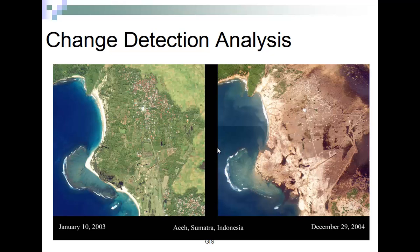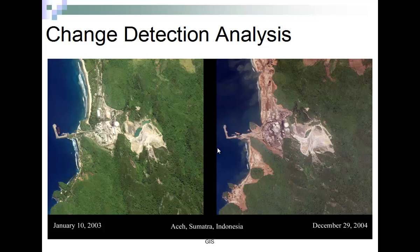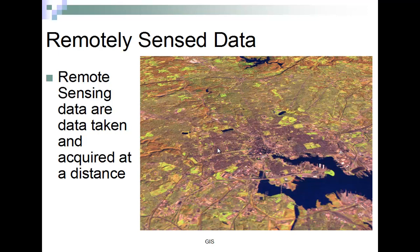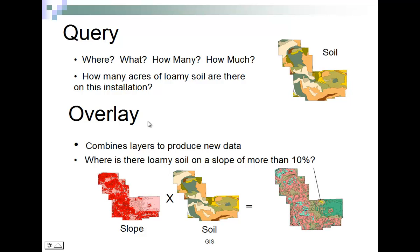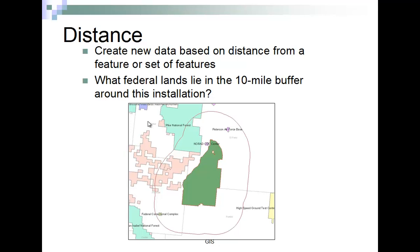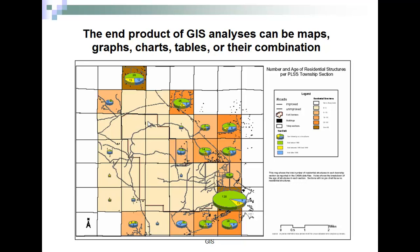These images are from Sumatra around the Boxing Day tsunami in 2004 — this is remotely sensed data taken from an airplane or satellite. We can compare our points, lines, and polygons — the fundamental GIS data types. We can also query things: how many features are in overlays, and look at distances — how far around something do we want to buffer? And typically our end product is going to be graphs, charts, tables, or a combination of the two.